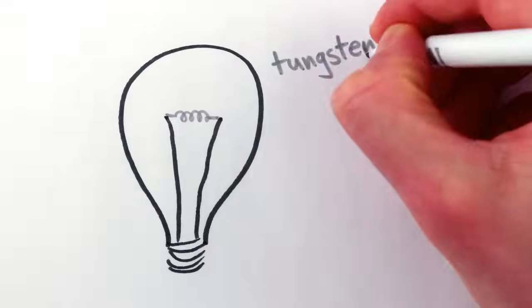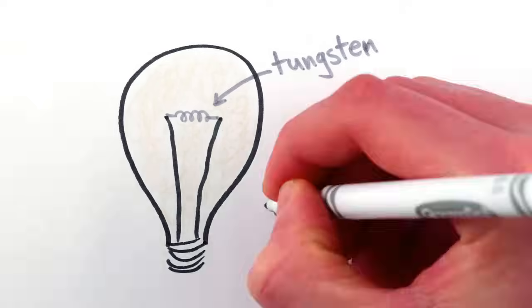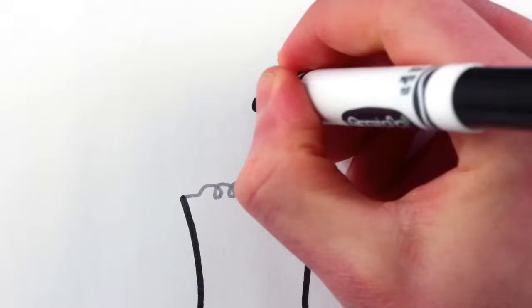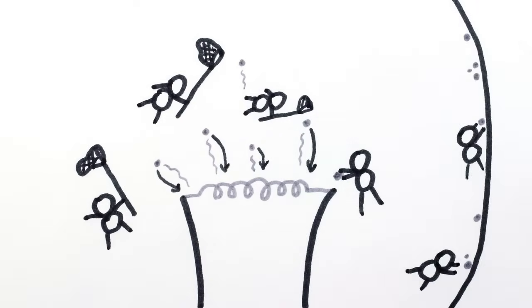Halogen bulbs have the same tungsten metal filament as typical incandescent light bulbs, but they contain a little bit of a halogen-based gas in the bulb as well. The chemistry of the halogen gas allows it to capture stray tungsten atoms that evaporated off the filament and shepherd them back to where they belong, which both prolongs the life of the filament, as well as keeps the inside of the bulb clean and clear.